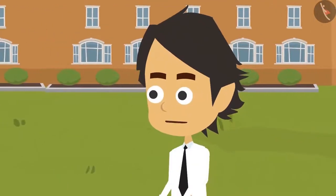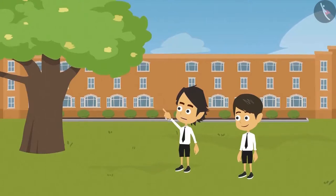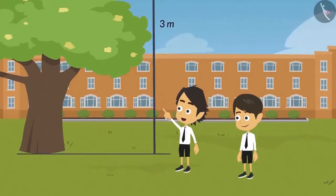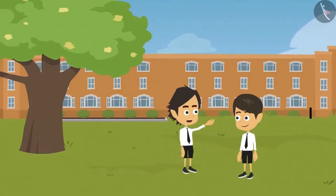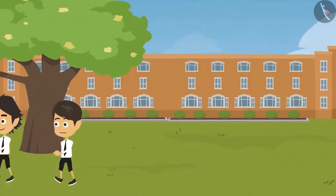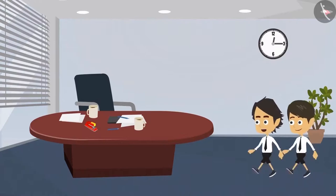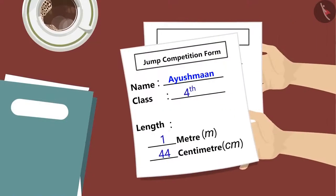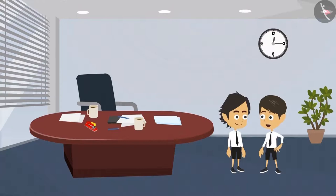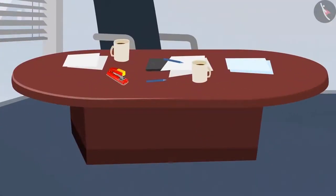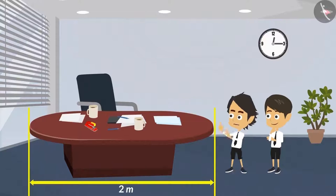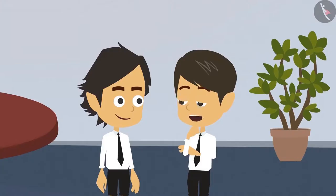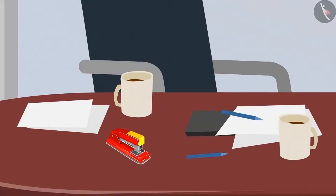That is easy. See this tree — it would be appropriate to measure it in meters as it is very big. The height of our school building too should be measured in meters. The teacher is not here; let's keep the form here. Now, which unit will you use to measure this table? We will measure it in meters as it is very big. So will we measure the stationery items on the teacher's table — such as paper, stapler, pen — in centimeters? Yes, because all these objects are very small.